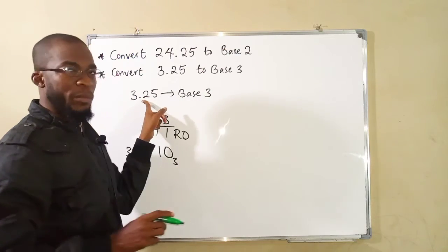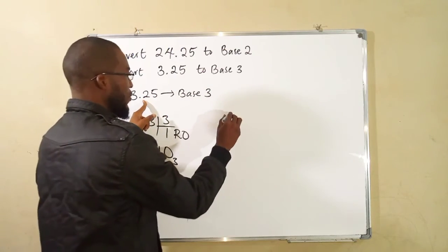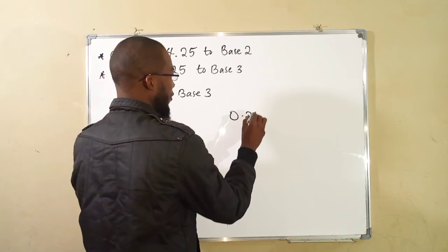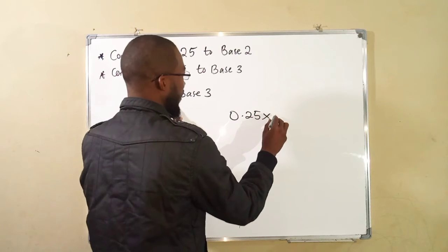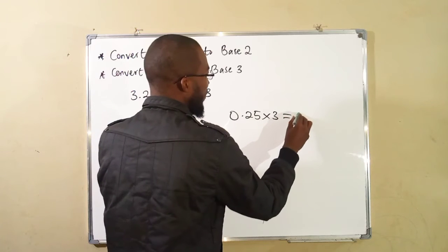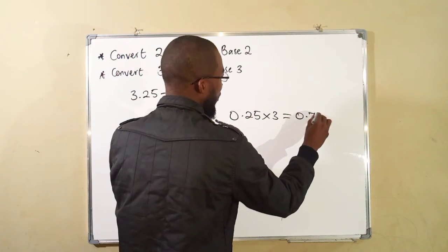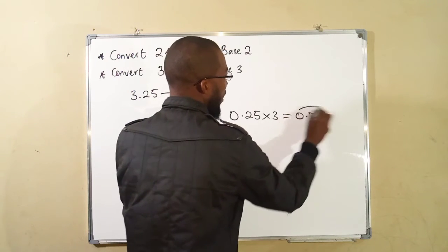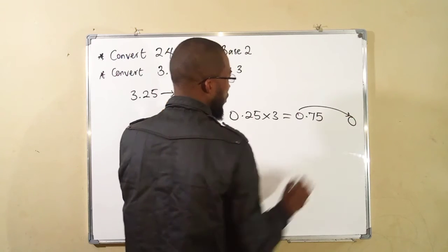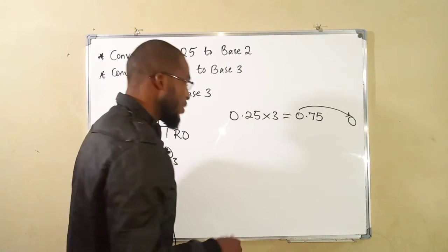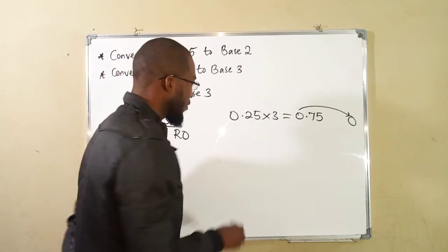Now the decimal part is 0.25. You multiply it by 3. You shall obtain 0.75. Take away this whole number, which is 0. Taking away the whole number, still you will be left with 0.75.